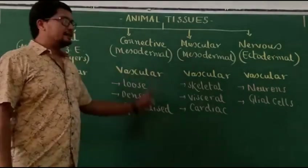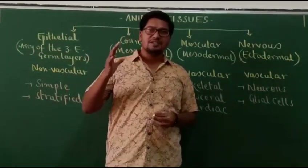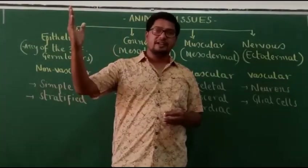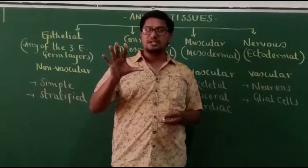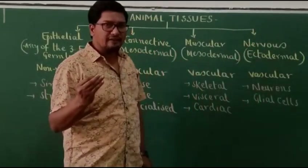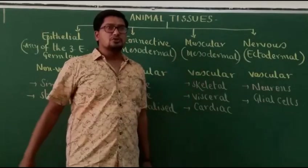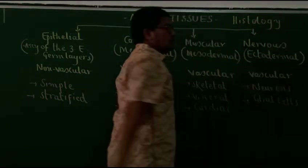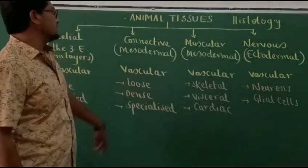In today's class, let us discuss the topic of animal tissues. A tissue is a group of cells having common origin or performing the same or related function. Except for poriferans, commonly called sponges — the only multicellular animals without tissues — starting from coelenterata up to the highest phylum chordata, cells having common origin performing the same or related function are aggregated to form a tissue. The study of tissues is called histology — 'histios' means tissue, 'logos' means study.